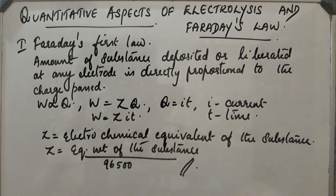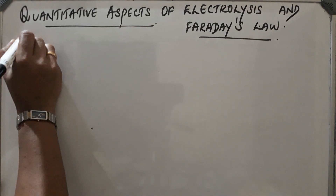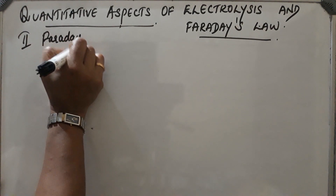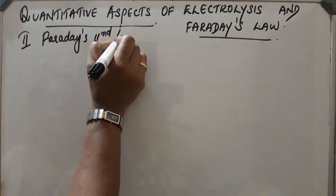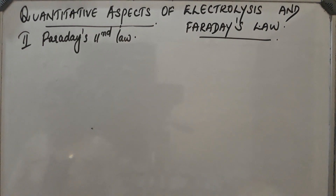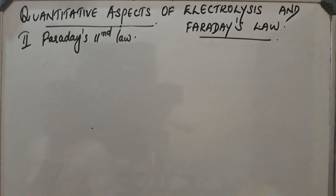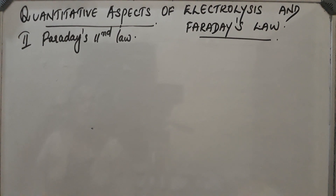Next, let us discuss Faraday's Second Law. Faraday's Second Law states that when the same quantity of electricity is passed through solutions of different electrolytes connected in series, the weight of the substance produced at the electrode is directly proportional to their equivalent weight. That is, if two solutions are taken, the weight of the substance produced will be proportional to the equivalent weight of that substance.